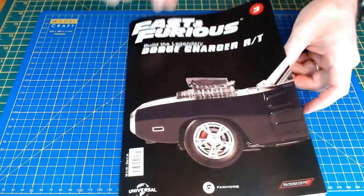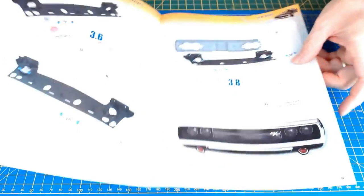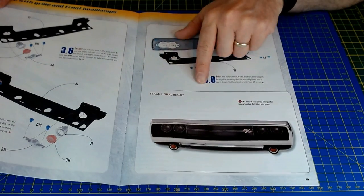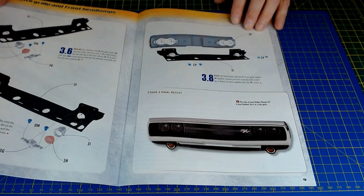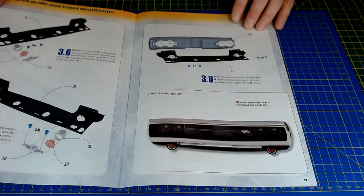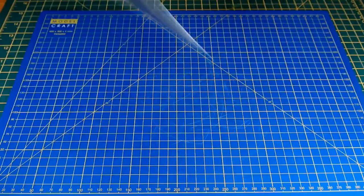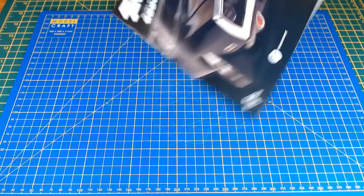So that was issue three of the Fast and Furious Charger. Quite a nice part - the iconic front grille, the RT logo and all that stuff. Really nice part done there.